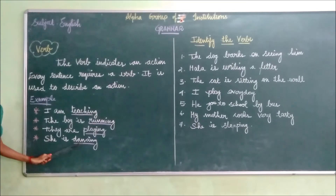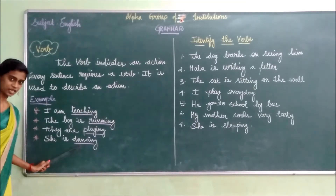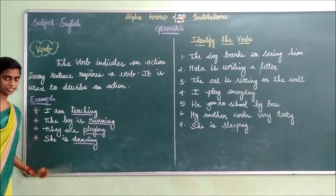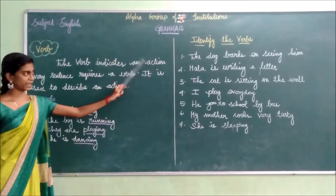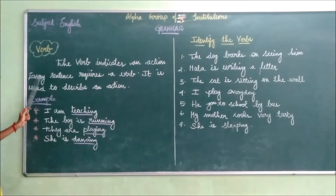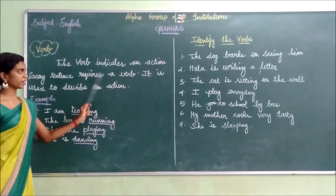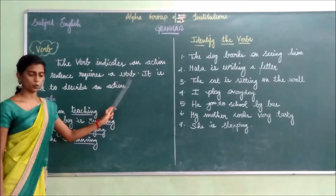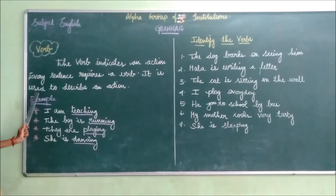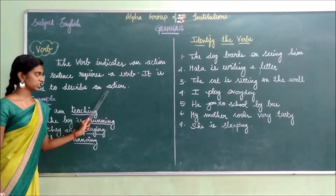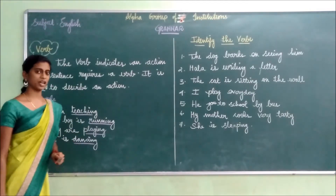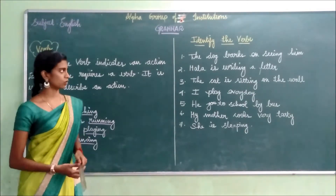She is dancing. In the sentence, dancing is the verb. Shall we read once again? The verb indicates an action. Every sentence requires a verb. It is used to describe an action. Action means nothing but it is of doing something.